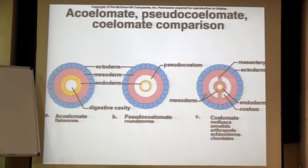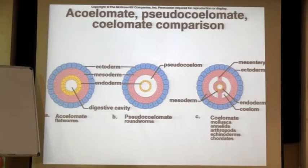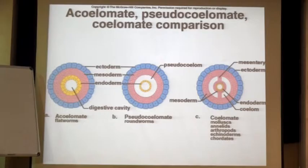If you want to make a true coelomate, you should have the cavity which is layered on both sides. If this is the cavity, this layer should also be mesoderm, and this side should also be mesoderm. In the second figure you don't find two mesoderm layers — that's why it is pseudocoelomate.